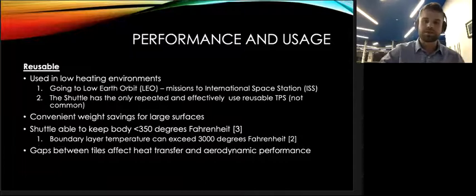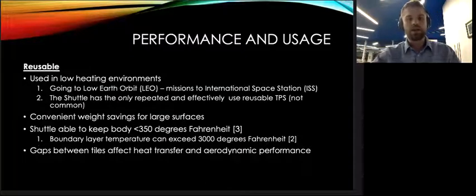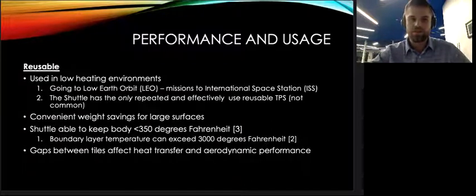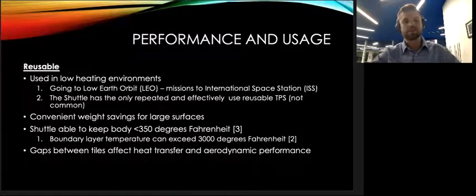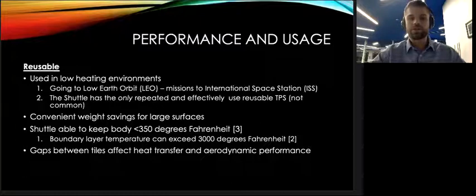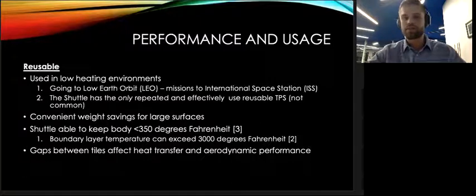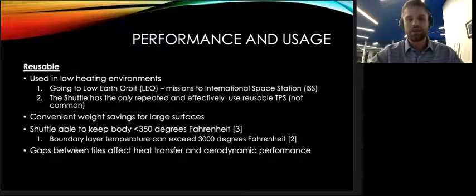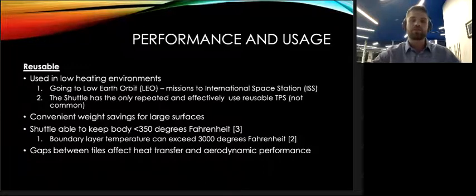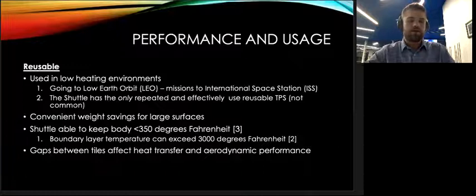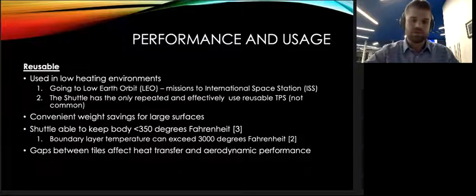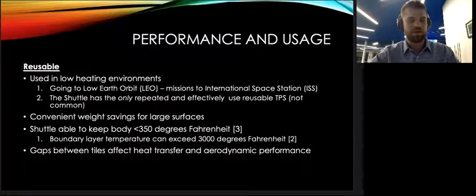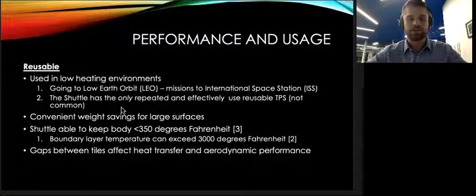Now, considering reusable, again, this was covered initially on the first slide. But again, they are convenient to use when you have an extremely large windward surface, such as the space shuttle, because they are so light. They help save so much money. The shuttle also performed very well. It was able to keep the aluminum body of the shuttle less than 350 degrees Fahrenheit when it was seeing boundary layer temperatures exceeding 3000 degrees Fahrenheit. However, its performance was again affected by gaps between the tiles or this extremely complex assembly. So little vortices would form, affecting the aerodynamic performance in addition to the heat transfer characteristics as well.